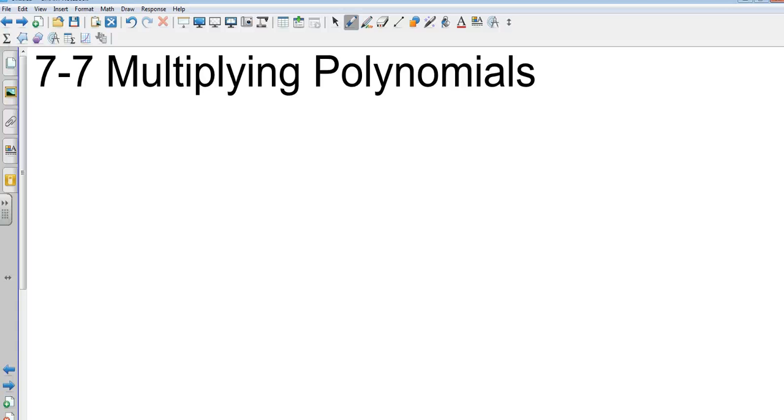Okay, 7-7 Algebra 1, multiplying polynomials. So we're going to learn one of the most commonly used forms of multiplication in algebra and any other math from this point on, and that is called the FOIL method.